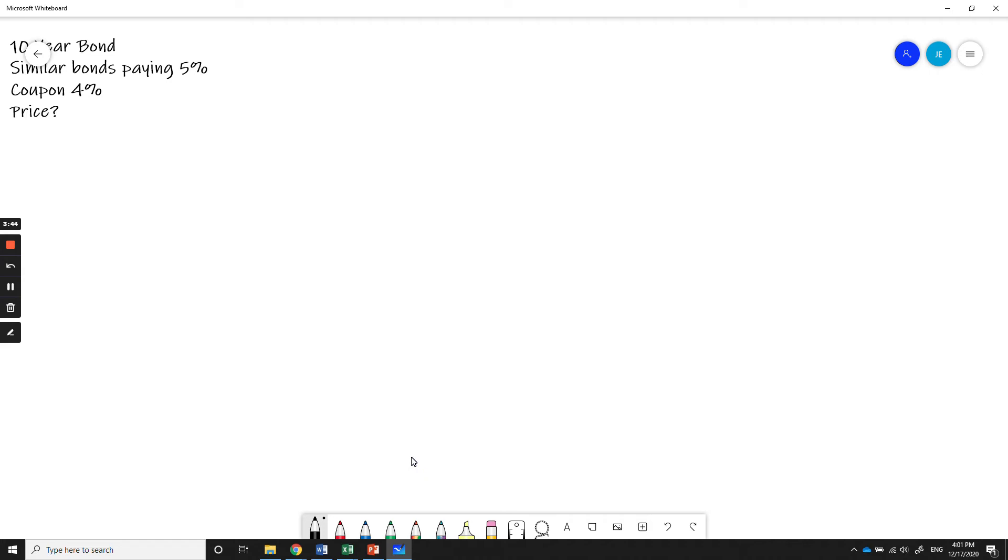Well, first thing you always do when looking at any kind of mathematical question is you write out your variables. And then start with what you know. It may be that you only know one thing, but you should know at least one thing. So for example, let's look at the date or let's look at the N. It's a ten year bond.